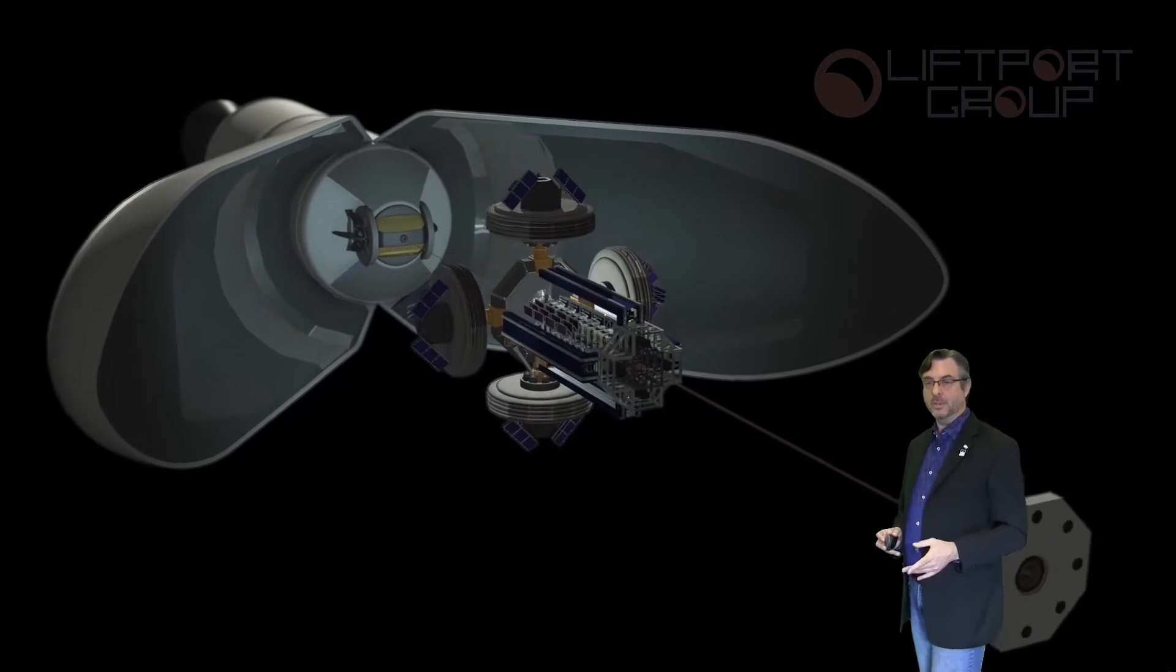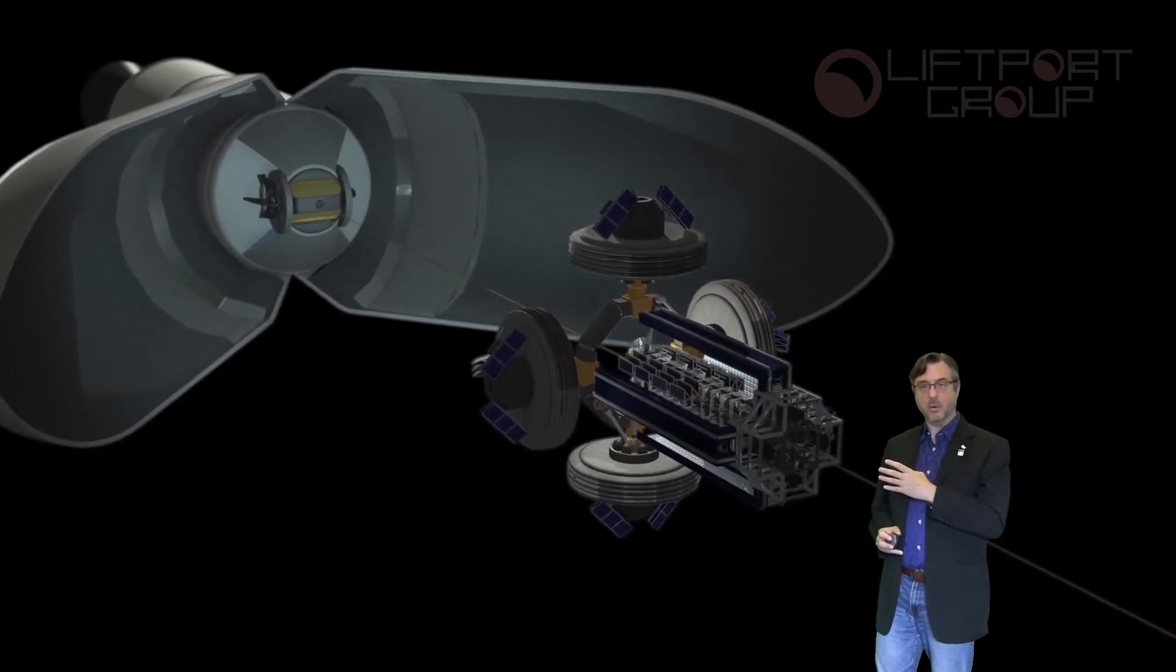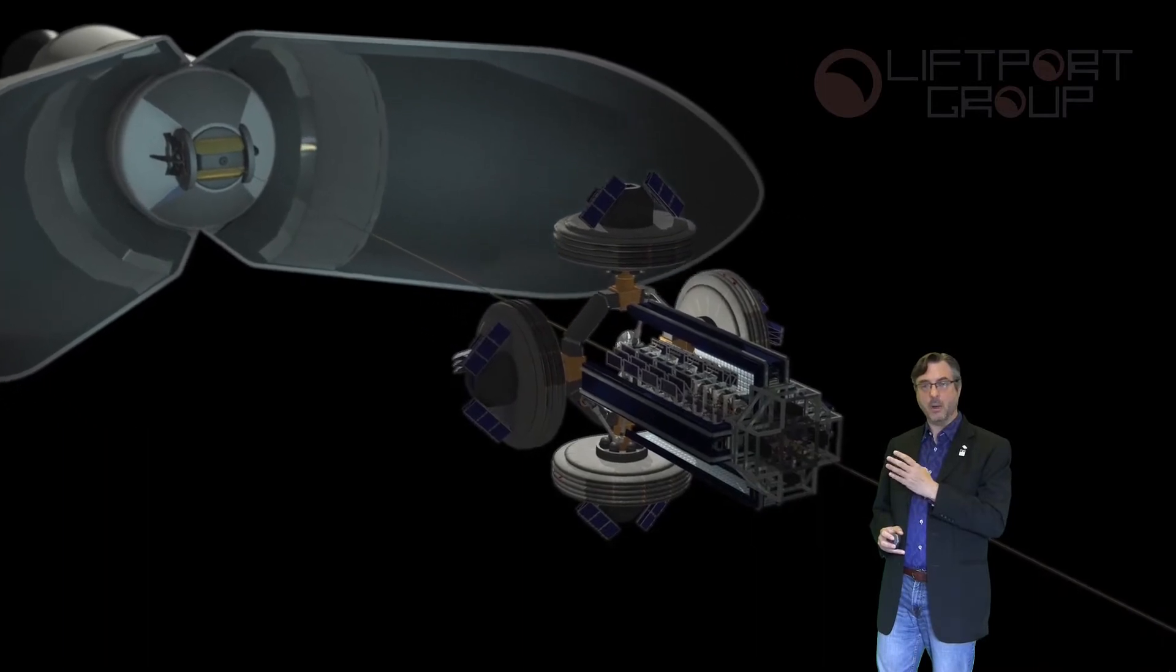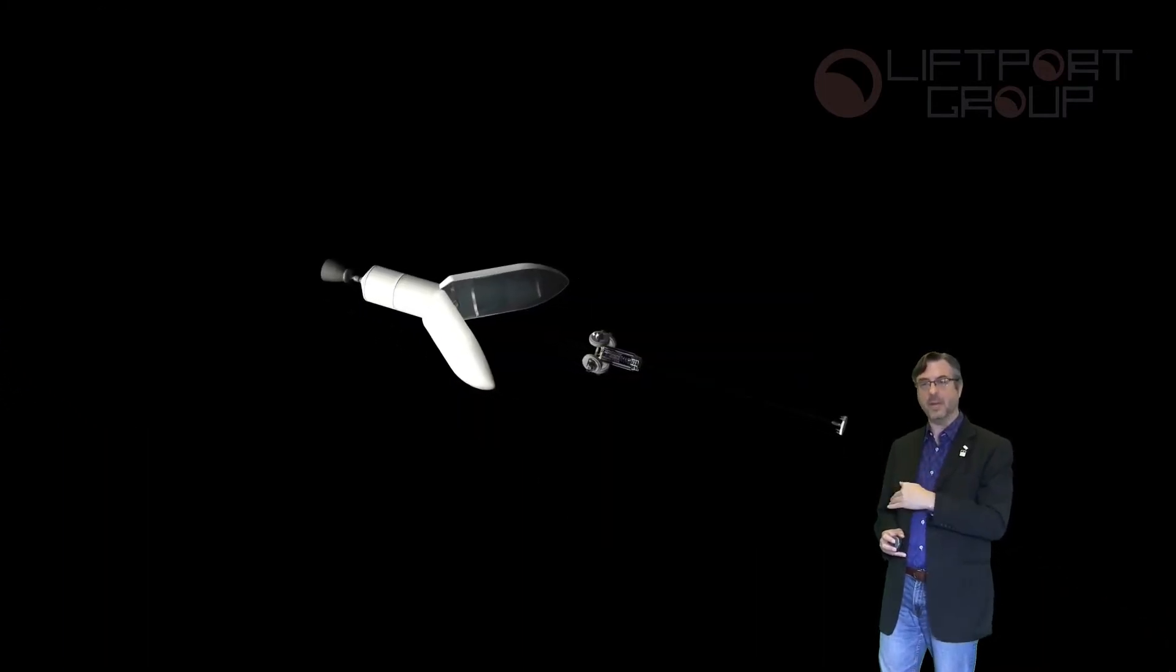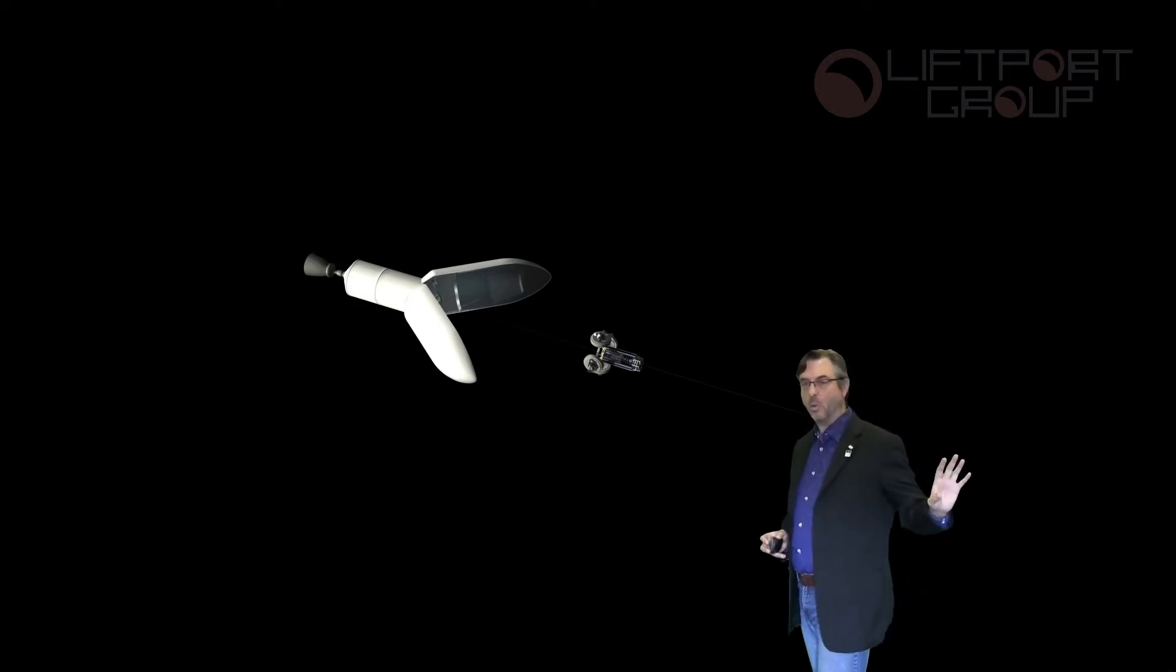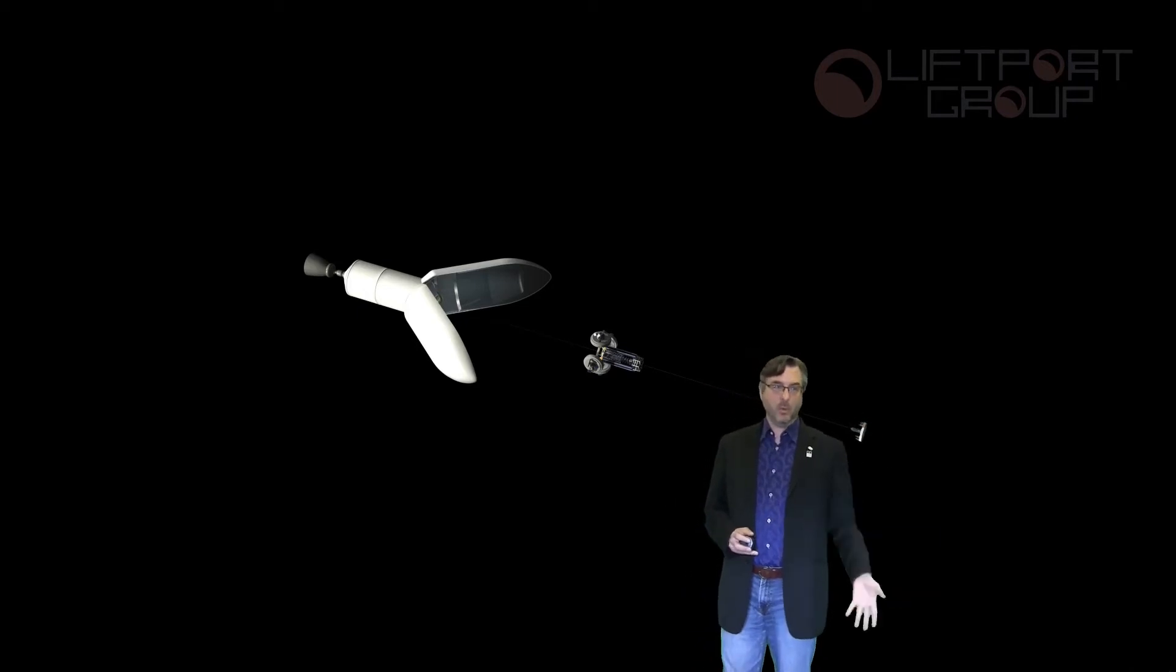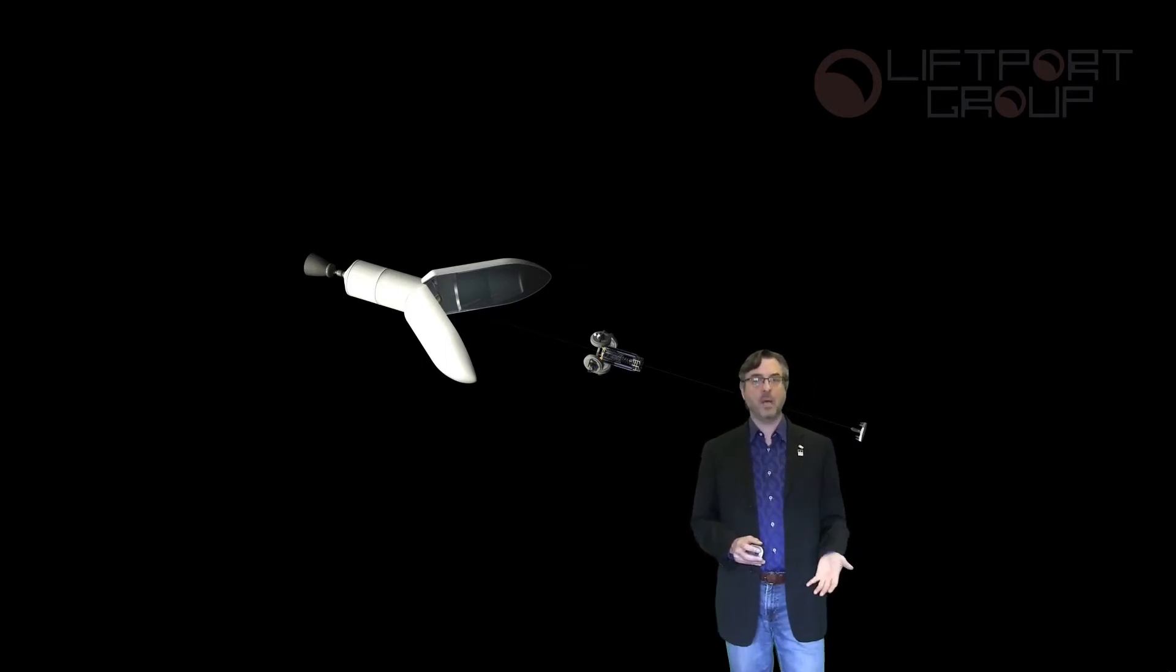A couple of things are going to happen at the same time. We're going to drop our anchor station down to the surface of the moon, we'll come back to that in a second. The counterweight is going to push back towards the earth. In a world where SpaceX is working really hard to recover their fairings, their cargo fairings, our plan may not be actionable, it might not work.